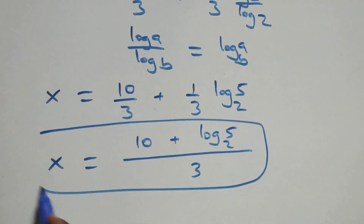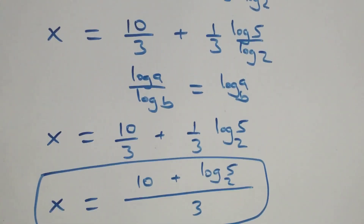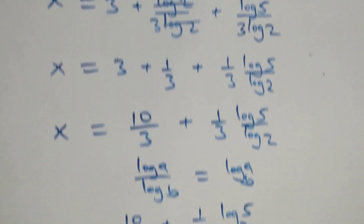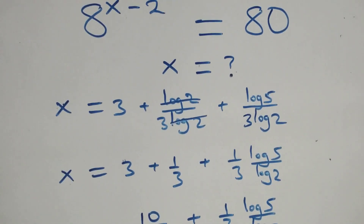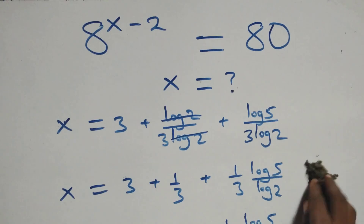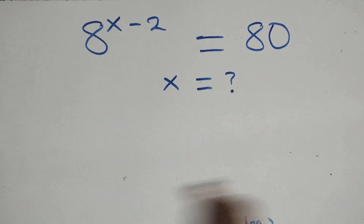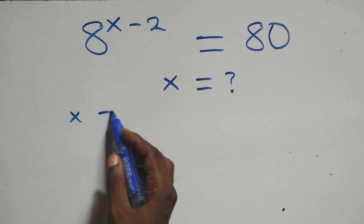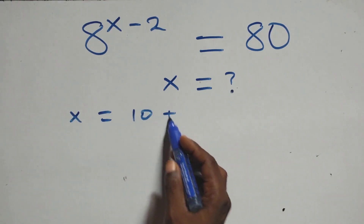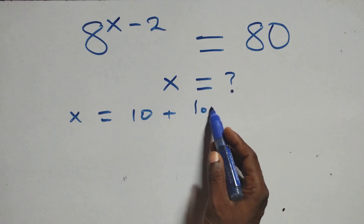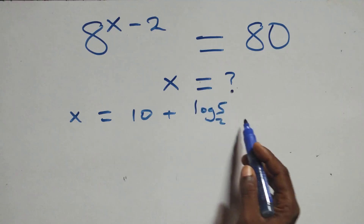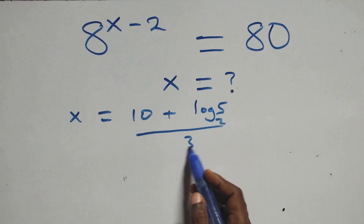At this, we have the value of x. Let's check if this satisfies the given problem. The value of x is x equals (10 + log₂ 5) all over 3. What we have here becomes 8 raised to power [(10 + log₂ 5) / 3 minus 2] is equal to 80 on the right-hand side.